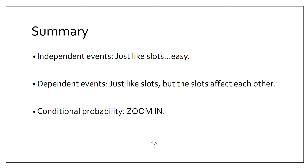Quick summary: independent events are just like slots — the slots do not affect each other. Dependent events also use slots, but now the slots affect each other and we have to think about how. For conditional probability, I know something about the people I'm trying to pick, so I need to zoom in. Thanks for watching.